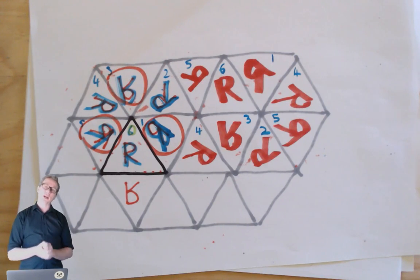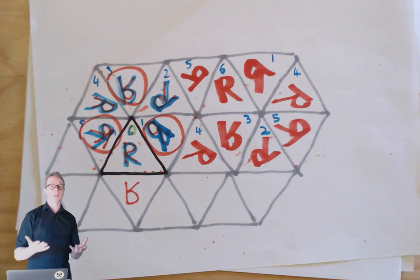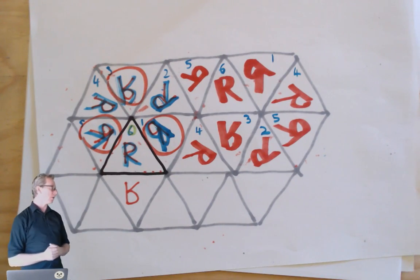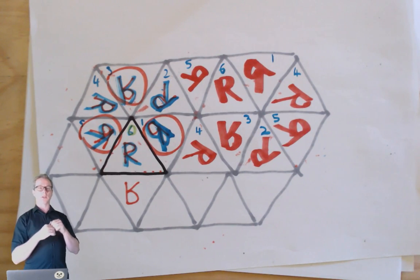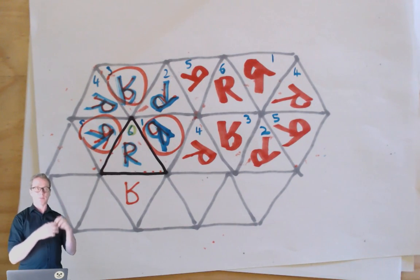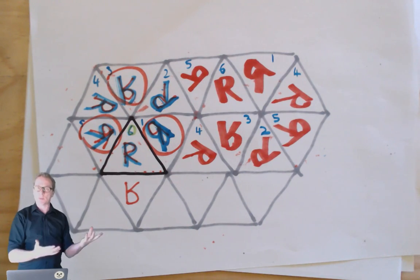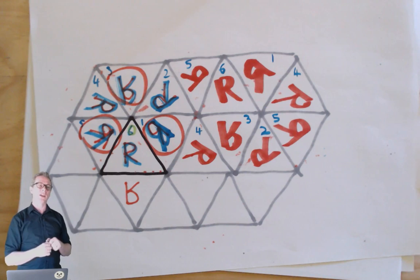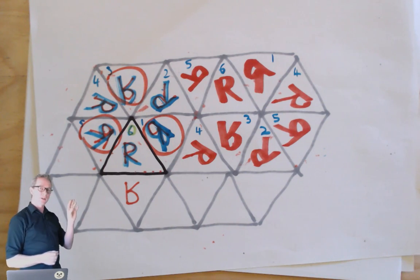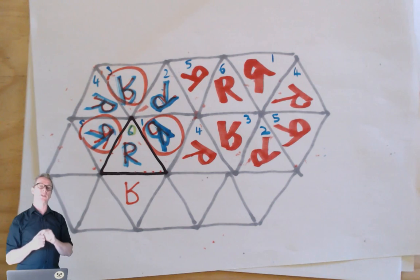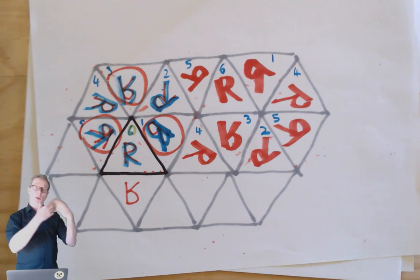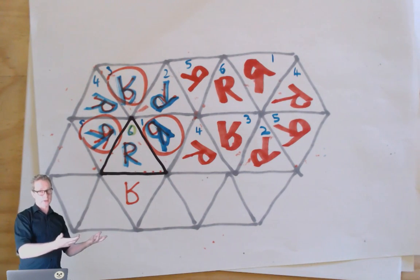Welcome to the third part of the kaleidoscope example series. In this part I'm going to do the last piece of the puzzle. I'm going to take those little triangles that I made last time for all of the different rotations and reflections and turn them into the kaleidoscope pattern.